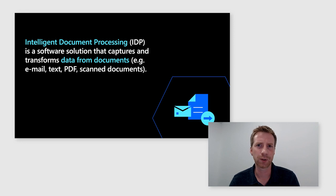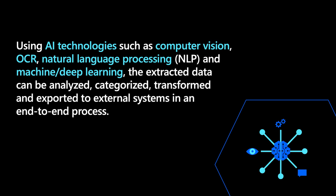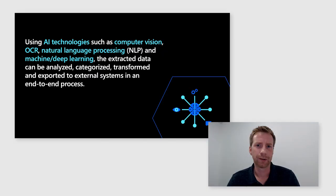Let's dive into Intelligent Document Processing specifically. IDP is a software solution that captures and transforms data from documents in an end-to-end process. Multiple different input formats are supported, like emails, text, PDF, or scanned documents. IDP uses multiple different AI technologies together, such as computer vision, OCR, natural language processing, machine learning, and deep learning, so that the AI model can understand the context of a document, analyze, categorize, and transform its content, allowing you to export data to external systems.